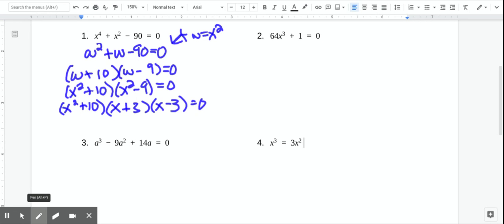So now we're completely factored. And what we're going to do is take each of these and set them equal to 0. So either X squared plus 10, X plus 3 equals 0 or X minus 3 equals 0. So these two are pretty easy. We get X equals 3 and X equals negative 3. Now this one,